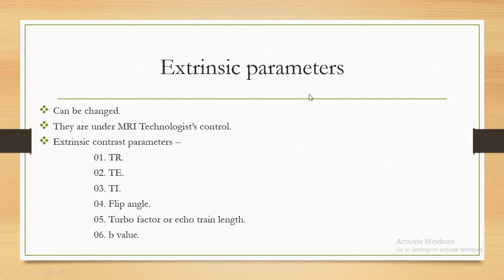Extrinsic parameters are those parameters which can be changed and they are under the MRI technologist's control. তার মানে হচ্ছে extrinsic parameters গুলো যেসব parameters change করা যায়, বদলানো যায়, এবং যেসব MRI operators এবং medical technologists-এর control-এ থাকে। Extrinsic parameters include: TR, TE, TI, flip angle, turbo factor or echo train length, and B value.